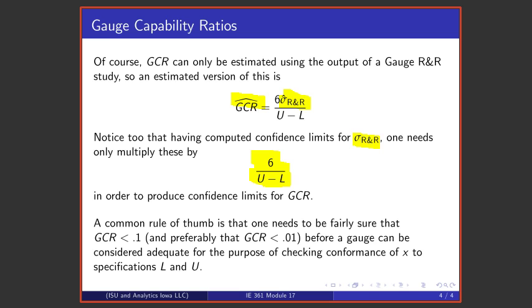At the end of the day, one really wants gauge capability ratios that are less than a tenth, preferably less than a hundredth. What that means is that the uncertainty of measurement is an order of magnitude or two orders of magnitude smaller than the allowable spread in the product value or product feature being measured.